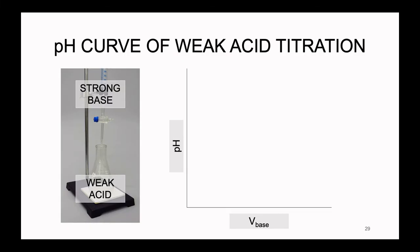Welcome back from that intermission. We've worked through one intense titration problem. Now we are moving from the strong acid–strong base case to the titration of a weak acid. The titration of a weak acid with a strong base is similar, but the shape of the pH curve is going to be a little bit different.